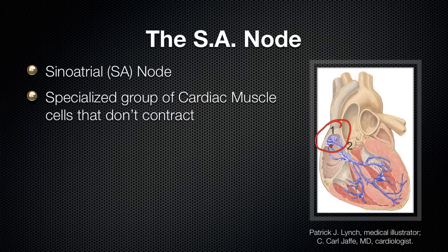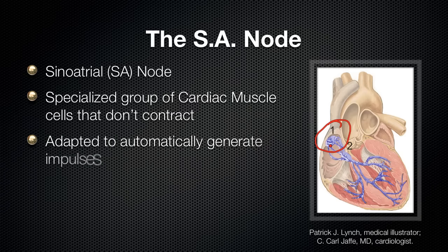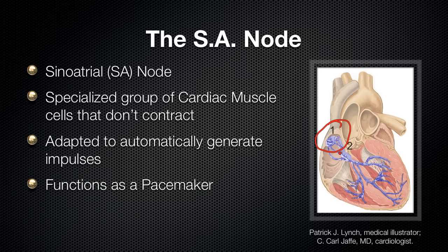What's special about these cells is that they are adapted to automatically generate impulses. So it can automatically cause signals that can spread throughout the heart causing the heart to beat. The SA node functions as the pacemaker of the heart.